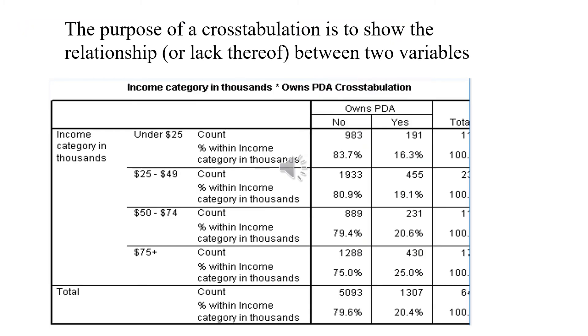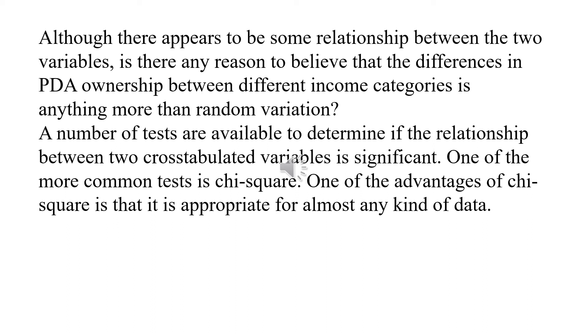The main target of using crosstab is to show the relationship or lack of relation between two variables. From the crosstab, we may get evidence about the relationship between any two variables. But from the counting or percentage, we cannot decide whether this relationship is significant or not.